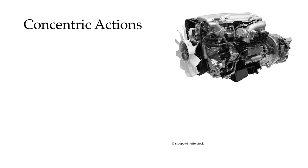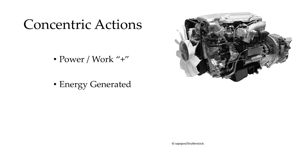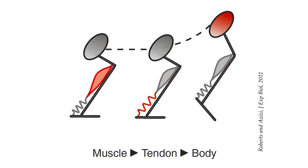With concentric actions, the work or power is positive, and the MTC is generating energy. Where does that energy go? It goes into the skeletal system. So if we were to trace the flow of energy, it will go from the muscle, through the tendon, and into the skeletal system, increasing its kinetic and/or potential energy.